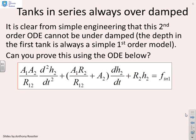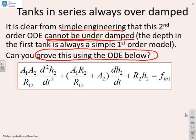The sorts of things you might want to do is say, can I understand the behaviors of the depth in this tank? Now, I could argue, from simple engineering, that although this is a second order ODE, it doesn't contain the possibility of having all the dynamics of a second order ODE. In particular, it cannot be underdamped. And I can make that argument simply because the depth in the first tank must always be represented by a simple first order ODE, and that governs the flow rate into the second tank. However, there are alternatives, and so a challenge for you. Can you prove that an ODE with the structure given here can never be underdamped? So it's always overdamped. Stable and overdamped.